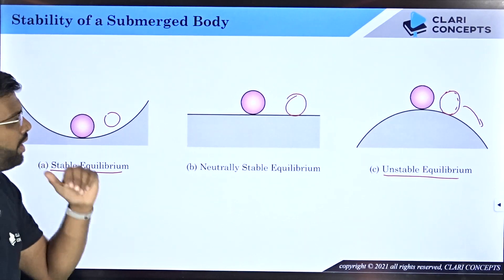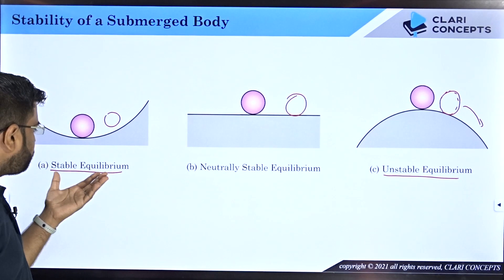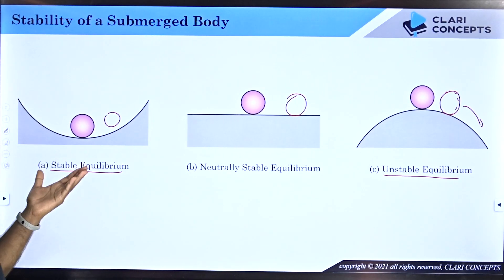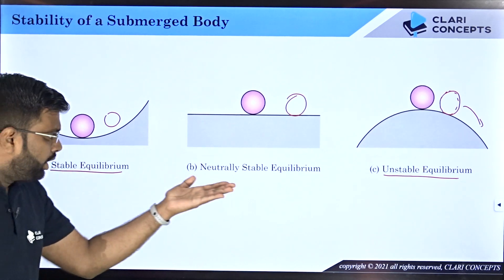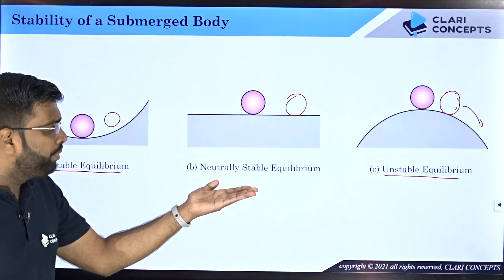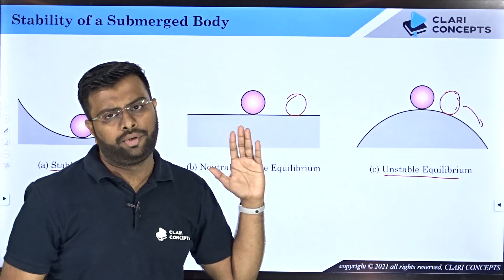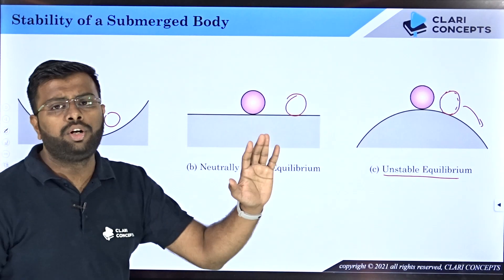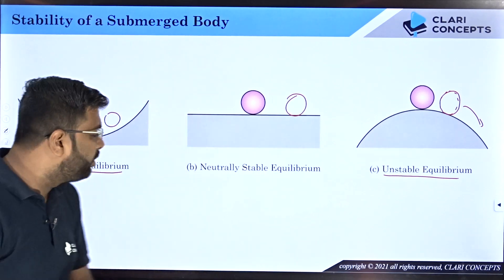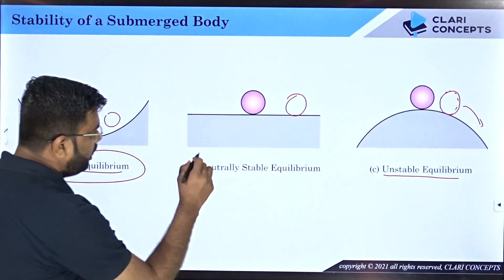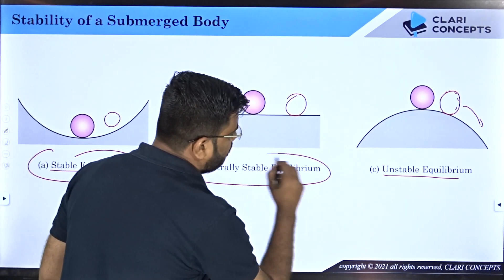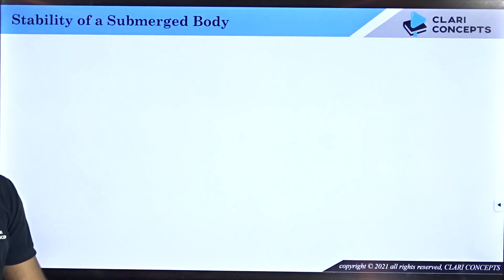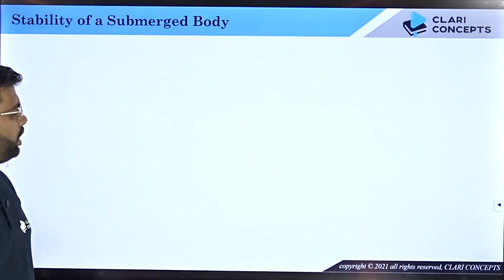These are the terminologies we need to understand because when we study this topic, you will see that stability of a submerged body is also related to stable equilibrium, neutrally stable equilibrium, and unstable equilibrium. This example was given to make you understand these three terminologies. Now we will move back to our original topic.